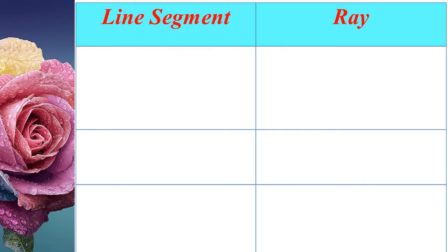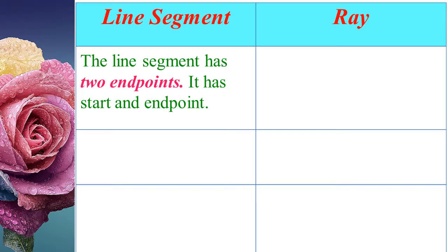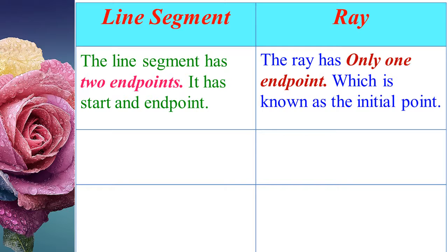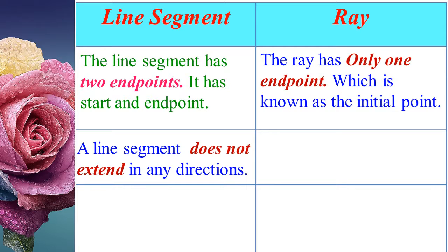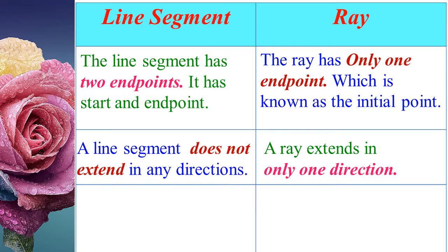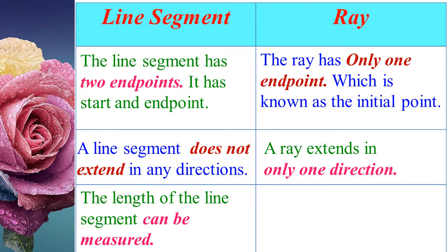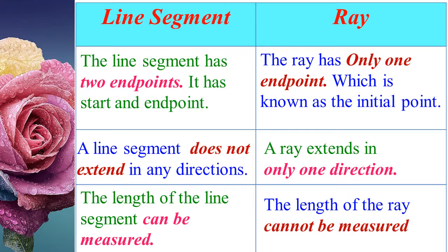Next, let us see the difference between line segment and ray. A line segment has two end points — it has a start and end point. But a ray has only one end point, which is known as the initial point. A line segment does not extend in any direction, but a ray extends in only one direction. The length of a line segment can be measured, but the length of a ray cannot be measured.